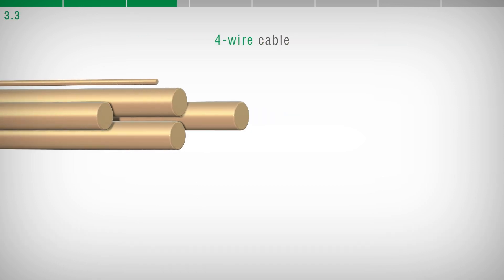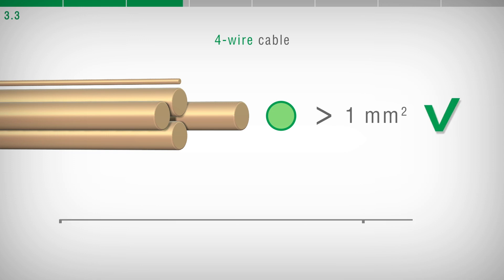When using four conductor connection cables, consider a minimum section of one square millimeter and preferably not exceed 300 meters in length.